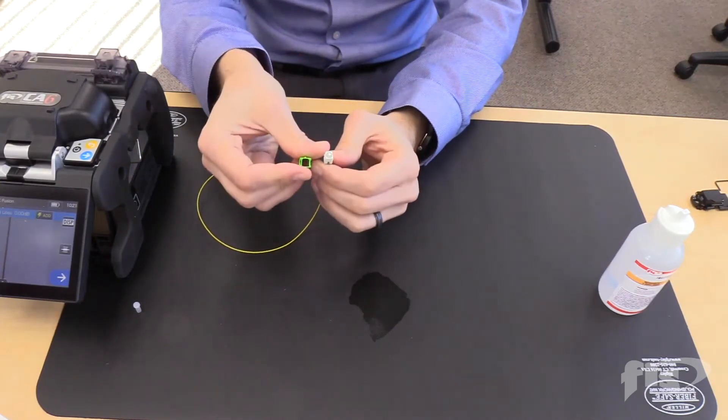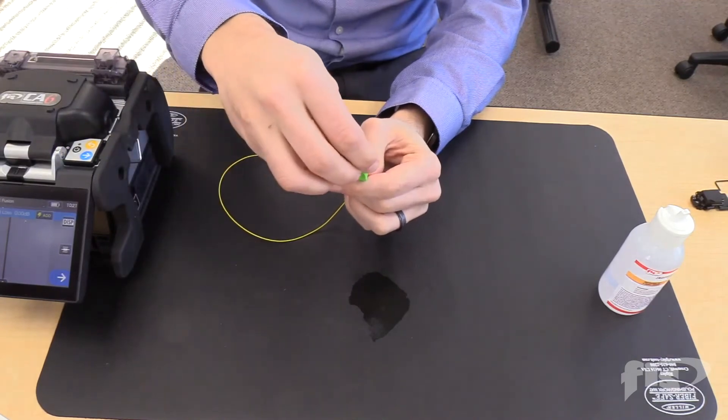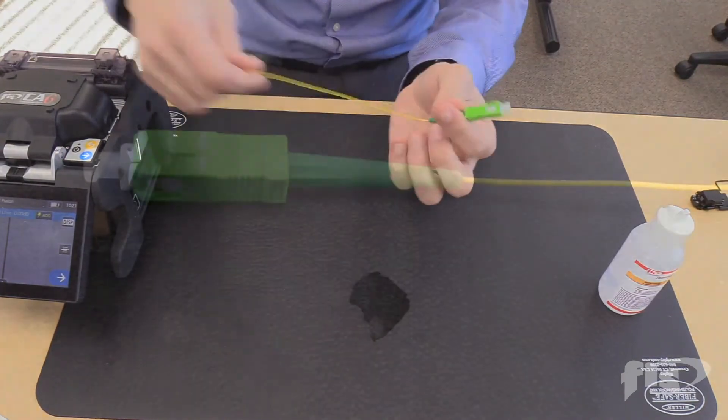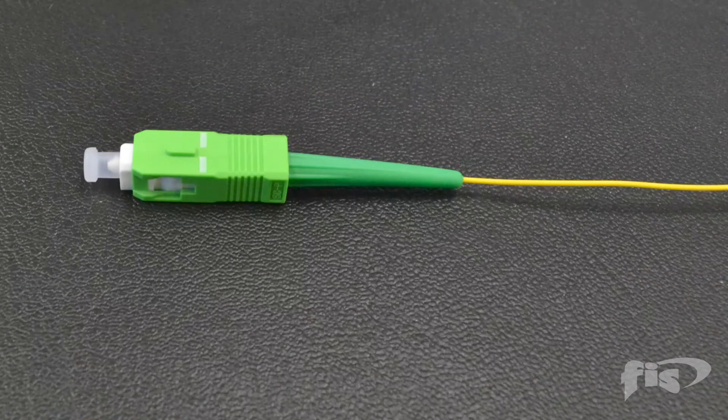Take your SC housing. Match up the key ways and slide it on. An audible click should be heard. Put the dust cap on. The termination of the FIS 900-micron Cheetah splice-on connector is now complete.